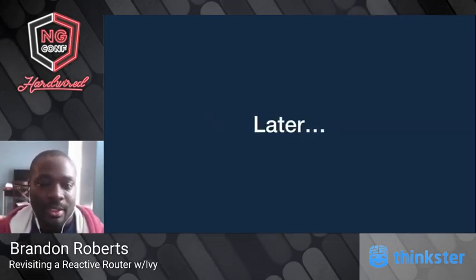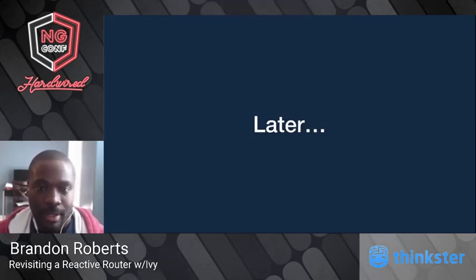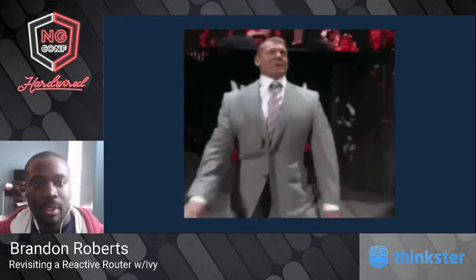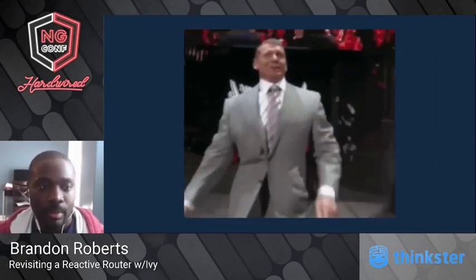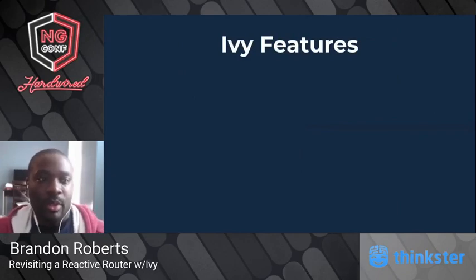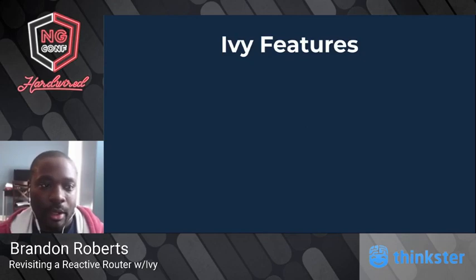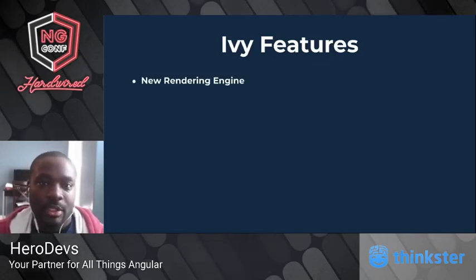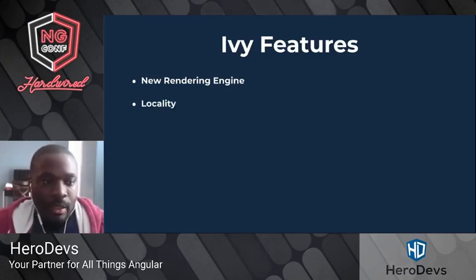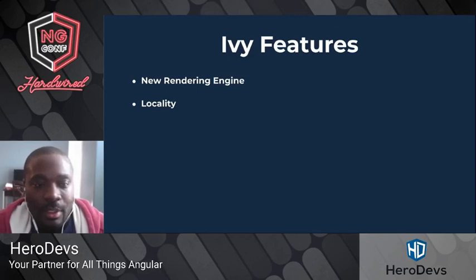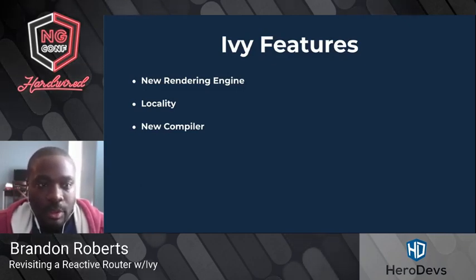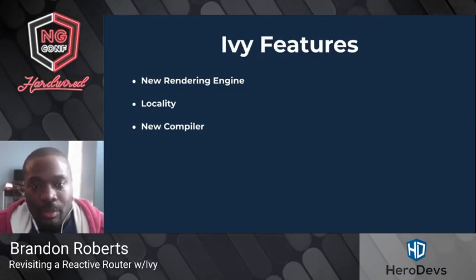Now that we have more context about the history of routers, let's fast forward to today. Angular Ivy has landed officially, and now we can really start to rethink some of these ideas in Angular — routing being one of them. Ivy brings a new rendering engine where components only bring in what they need. There's the concept of locality where components have the instructions they need at runtime. It also has a brand new compiler with many new features, including better type checking and AOT enabled by default.